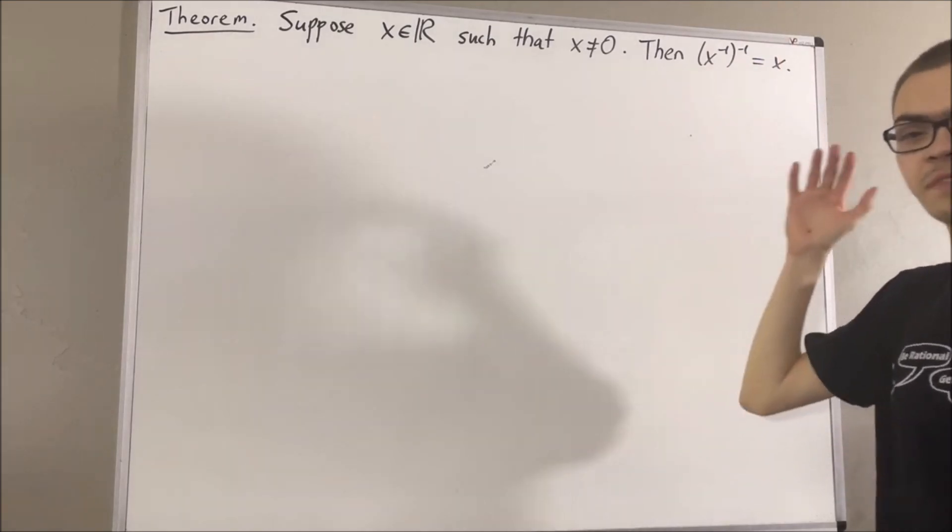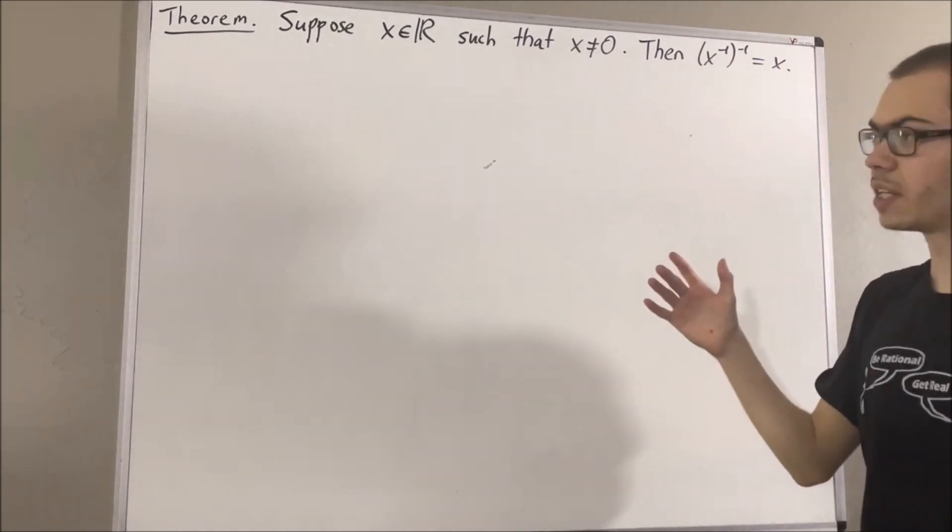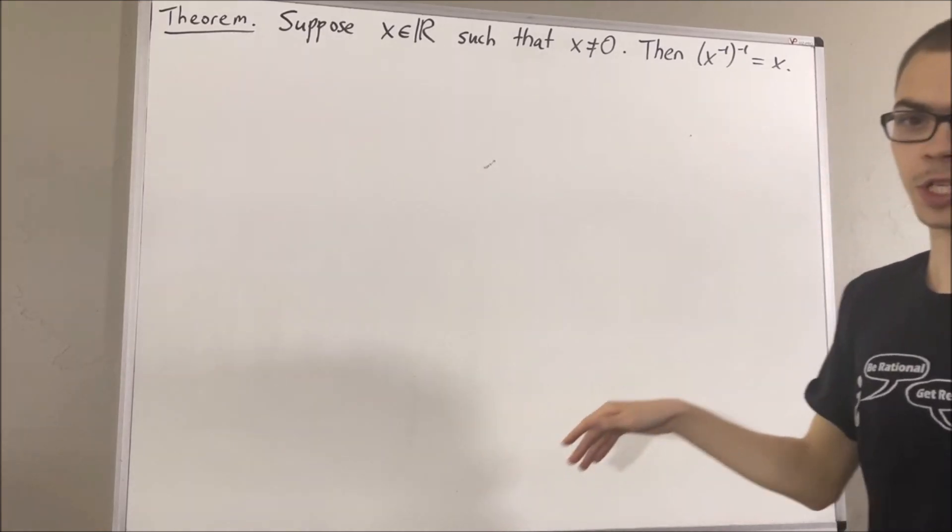Now in this series, we are using a list of 10 axioms for the real number system. And I'll leave that list of axioms in the description of the video below.